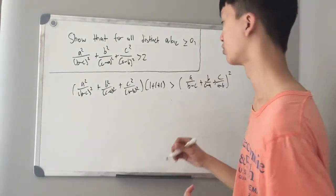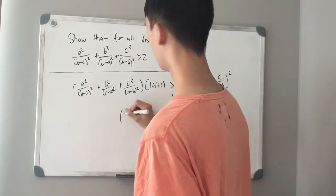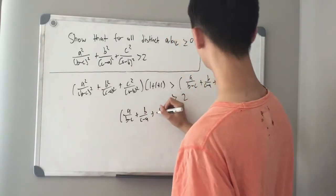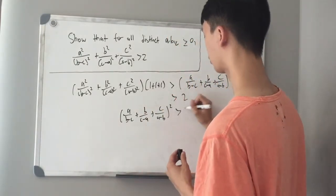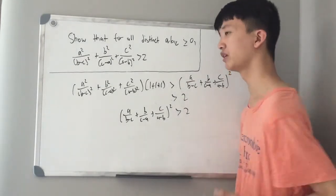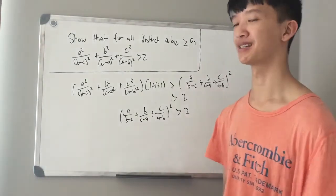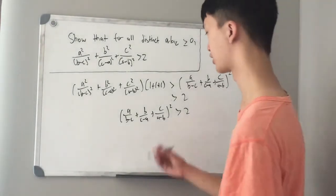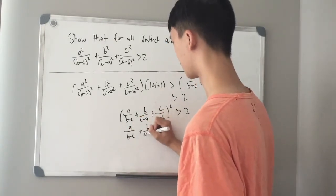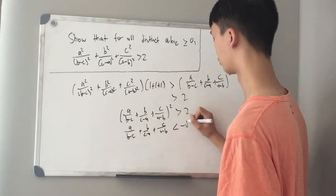Now we are also trying to prove that this is greater than 2, so it will suffice to show that [a/(b−c) + b/(c−a) + c/(a−b)]² is greater than 2. Testing out any values for a, b, and c will immediately show that this sum is negative, so instead of assuming it is greater than root 2, we actually assume it is less than negative root 2.